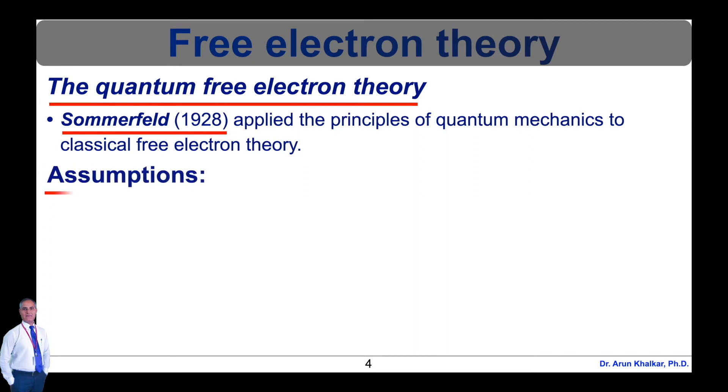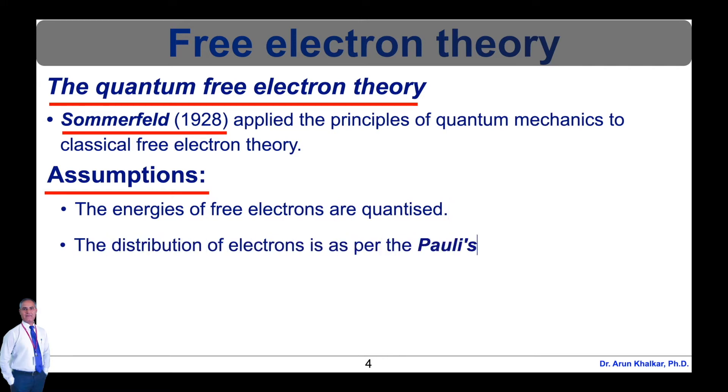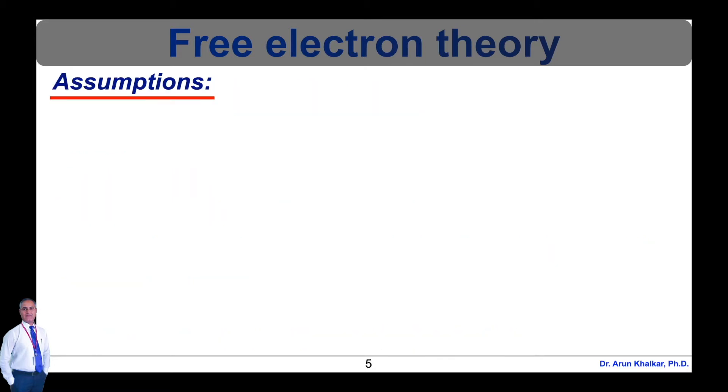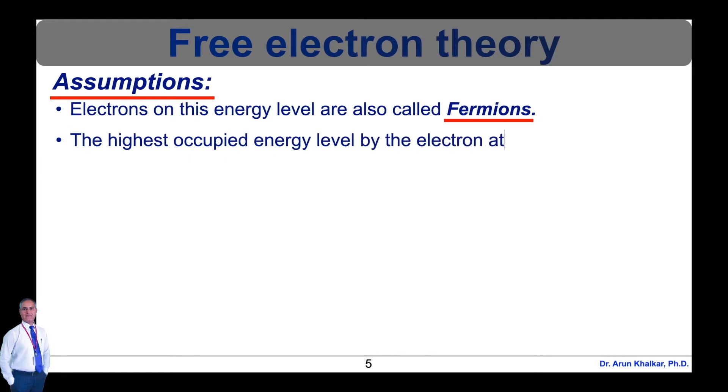According to the quantum free electron theory, the assumptions are as follows. The energies of free electrons are quantized. The distribution of electrons is as per the Pauli exclusion principle. Electrons travel under constant potential and confine to the boundaries of metal. All the attractive and repulsive forces are neglected. Electrons on this energy level are also called fermions and obey Pauli's exclusion principle. Each energy level can accommodate at most two electrons.